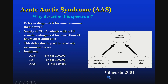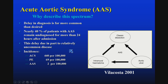Why describe this spectrum? Because the delay in diagnosis had previously been far more common than desired. Now with multi-detector CT, we are typically imaging these patients right away, so we as radiologists have a chance to diagnose and begin the intervention immediately. For many years, nearly 40% of patients with acute aortic syndrome remained undiagnosed within the first 24 hours after admission.